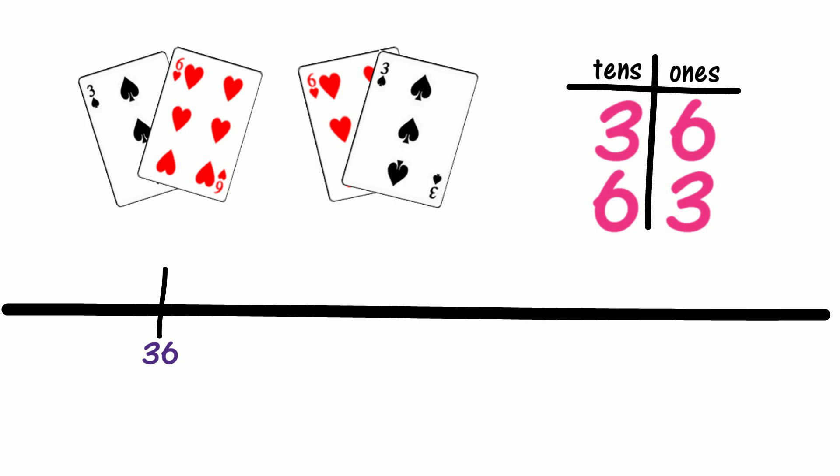Where would 63 go on our number line? Would 63 be on the right of 36? Is this because 63 is higher than 36? Where do higher numbers go on a number line? Do higher numbers go on the right end of the number line? Do 36 and 63 go in different places on a number line? Is this because 36 is three tens and six ones and is lower than 63, which is six tens and three ones?